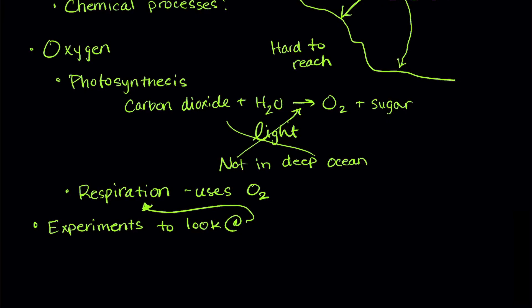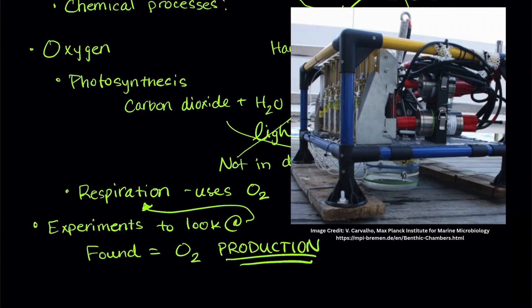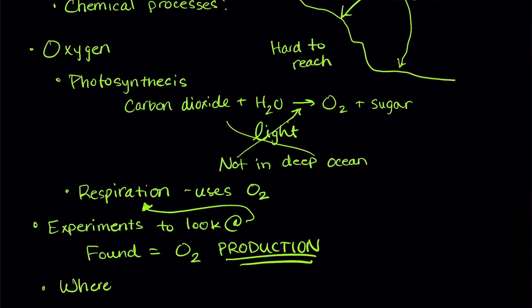So, our researchers set out to look at respiration in the deep ocean under a variety of conditions, but what they actually found was oxygen production. What? So, they did what any good researcher would do, and checked to make sure their instruments were working. And they were. So, they designed a bunch of experiments to figure out where the oxygen was coming from. This is the scientific method at its best.